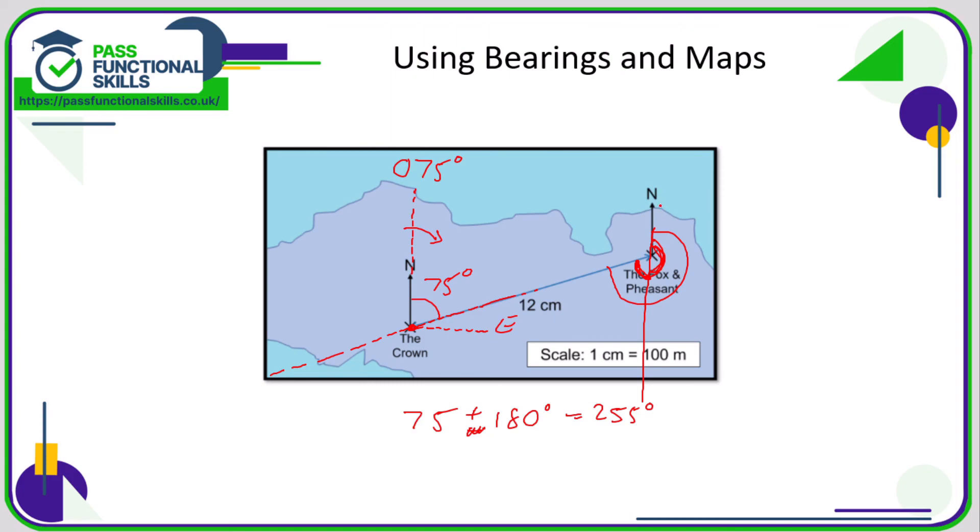Because this north line and this north line are parallel, and here we have two alternate angles. So a few ways you can solve that problem.